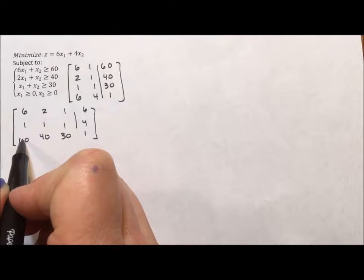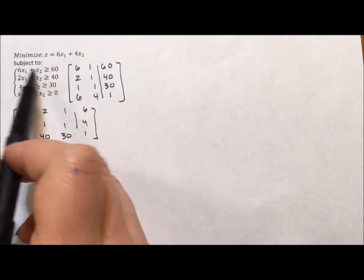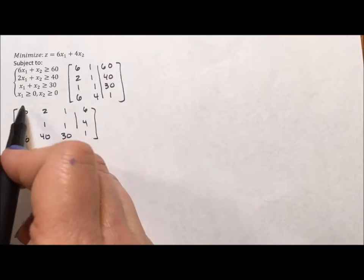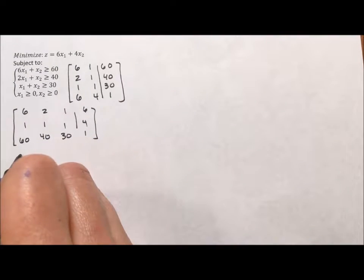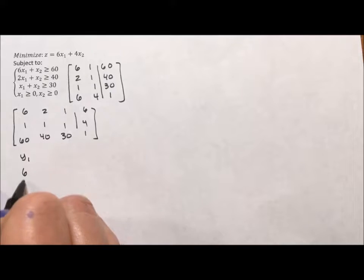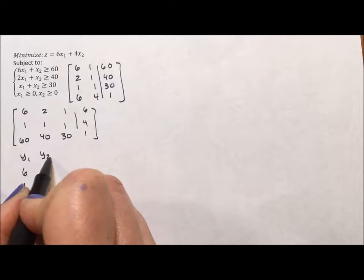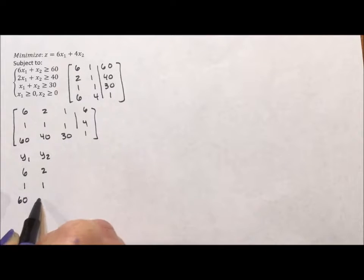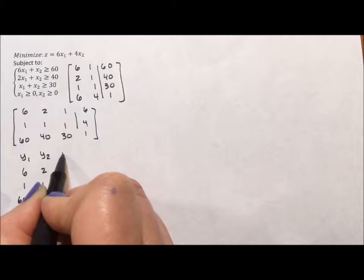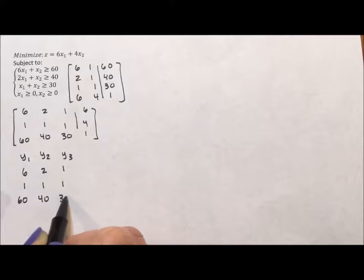6, 1, 60 does not represent x sub 1. It represents our first equation. So instead of setting this as my x sub 1 column, I'm going to set it up as my y sub 1 column, 6, 1, 60. My y sub 2 column is going to be 2, 1, 40. And my y sub 3 column is going to be 1, 1, 30.